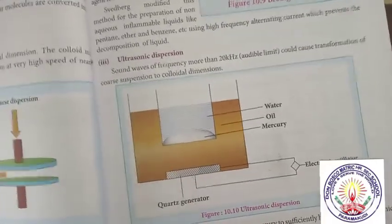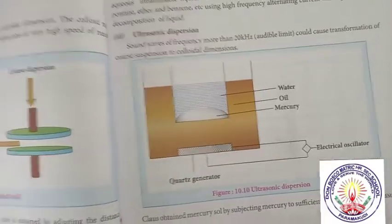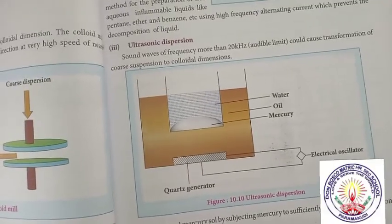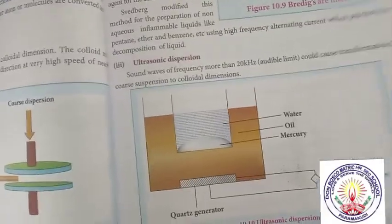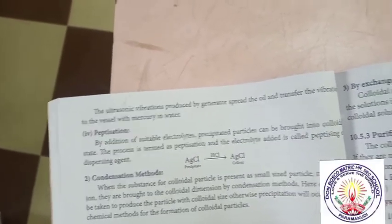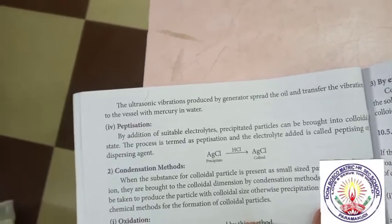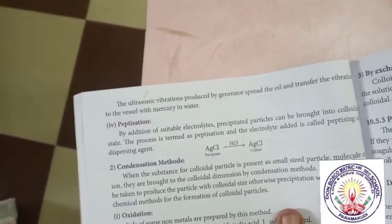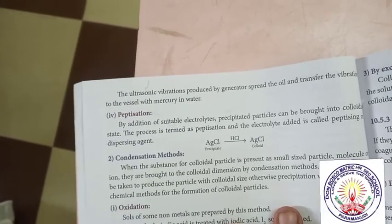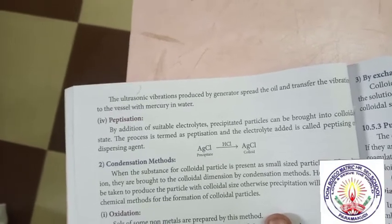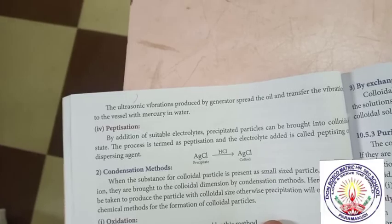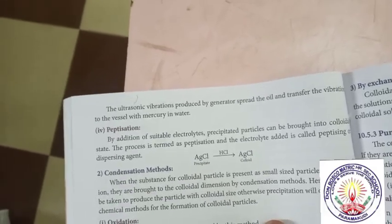Glass obtained mercury sol by subjecting mercury to sufficiently high-frequency ultrasonic vibrations. Ultrasonic vibrations produced by a generator spread through oil and transfer the vibrations to a vessel with mercury in water. Peptization: by addition of suitable electrolytes, precipitate particles can be brought into colloidal state.